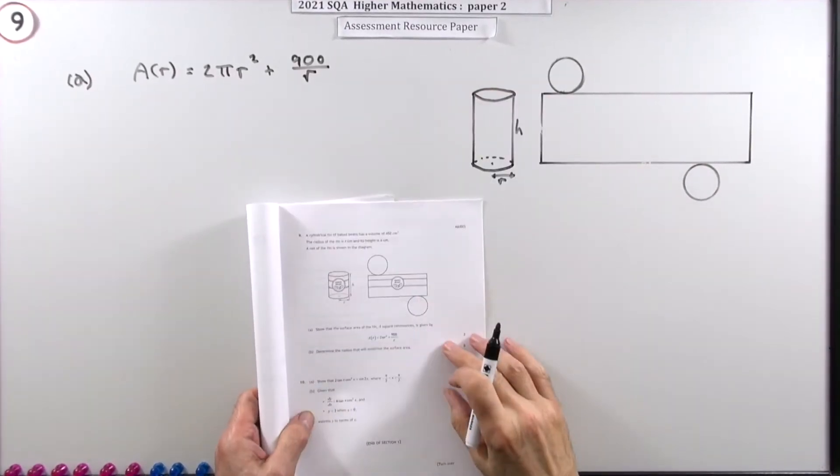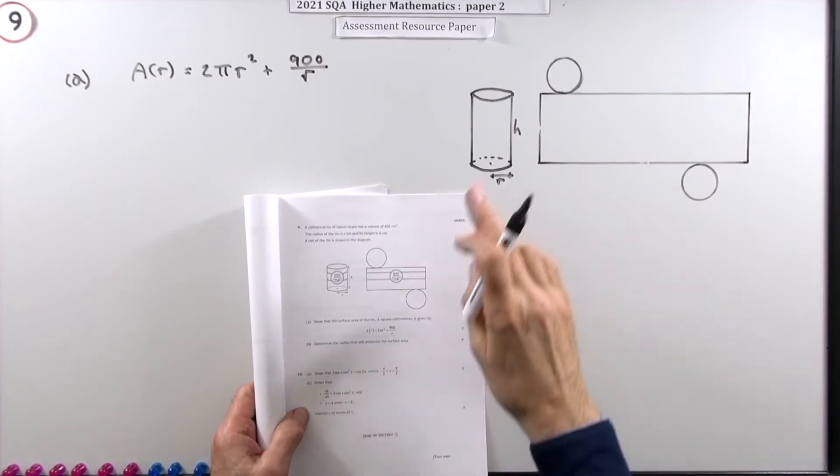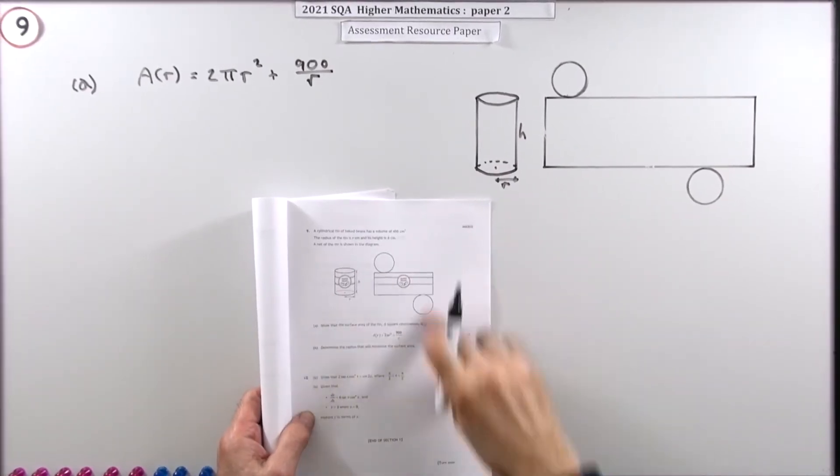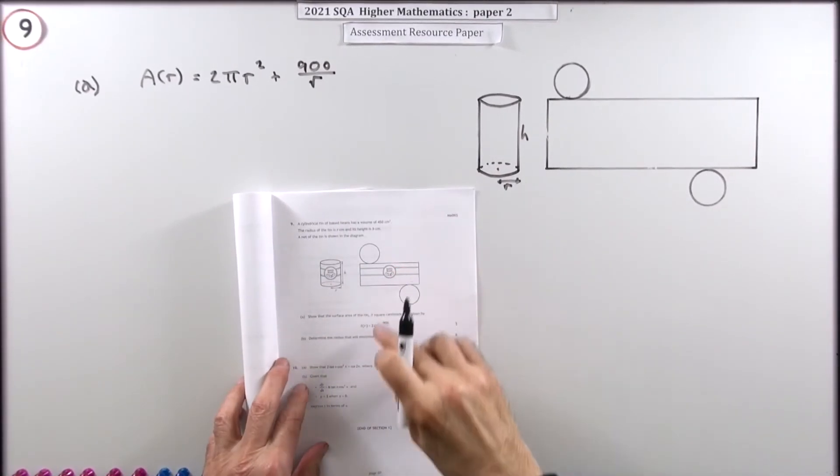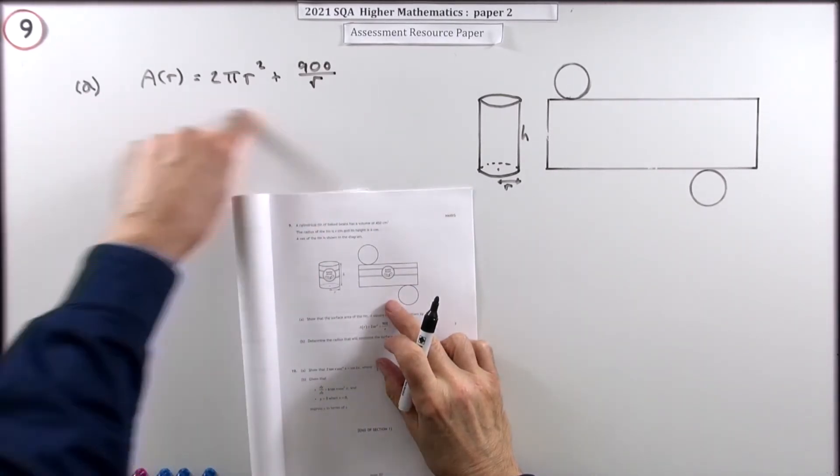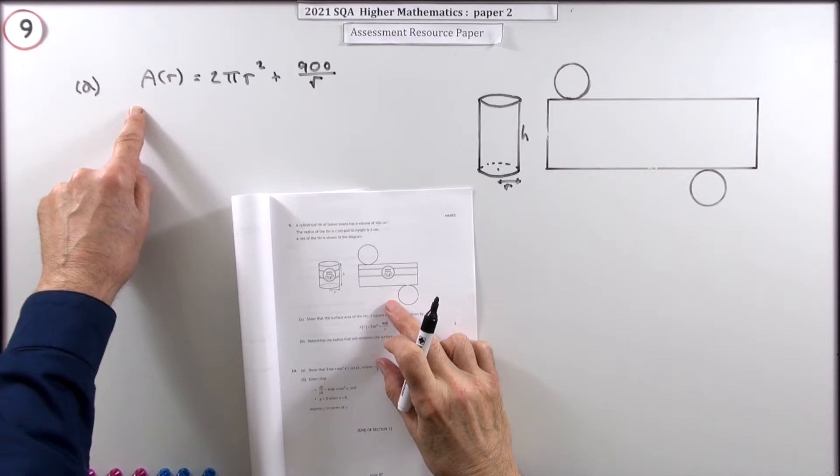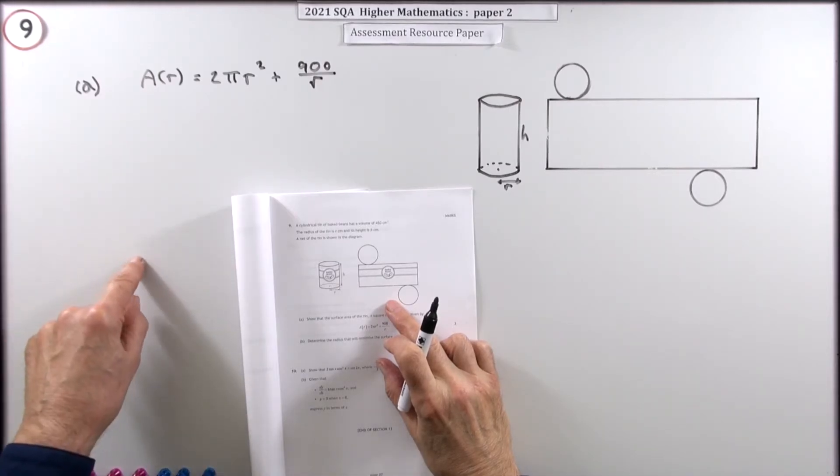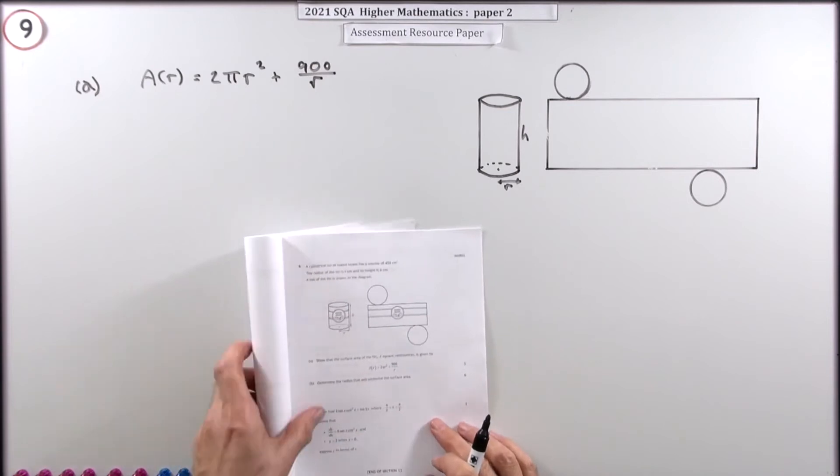So number nine then, from paper two of the 2021 Higher Maths Resource paper, the optimization question, the one with the two parts in it. In the first part, you have to derive the equation you're going to optimize, and in the second part, you have to find the value that optimizes it.